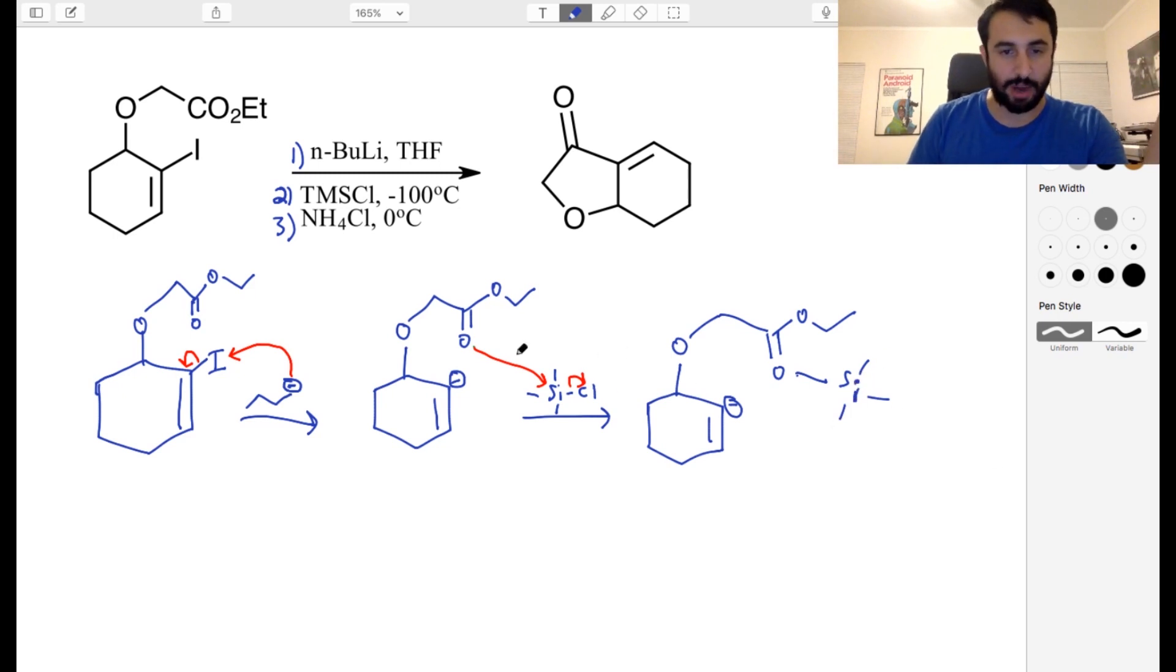Here's our silicon and the three methyls. Remember chlorine is gone, actually probably complexed with the lithium. Now the lithium can coordinate to the chlorine. We've got lithium chloride. So that's where the lithium went.